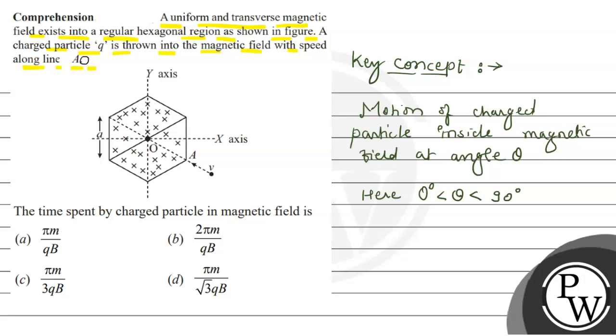Then there are two components of velocity that exist. We will focus on the first: V cos theta along the magnetic field, and the second one is V sin theta that is perpendicular to magnetic field.